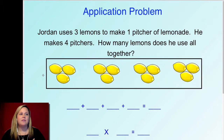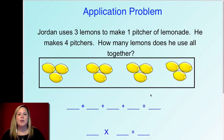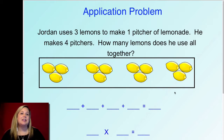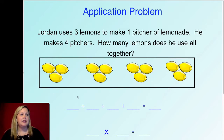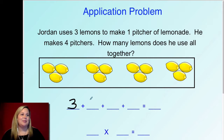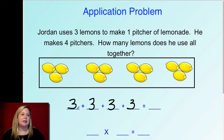And there's my fourth pitcher with three in it. So if I wanted to write a repeated addition sentence to match this problem, I could say there are three in each group. So I could write three plus three plus three plus three. To solve that, I could skip count by three: three, six, nine, twelve.